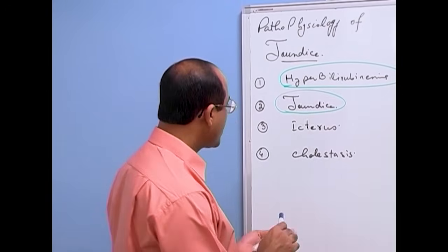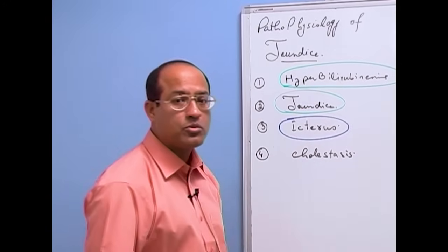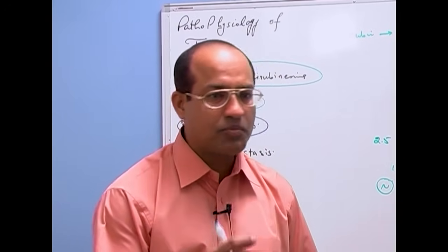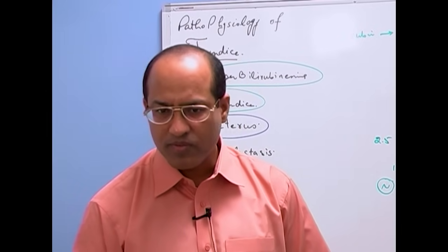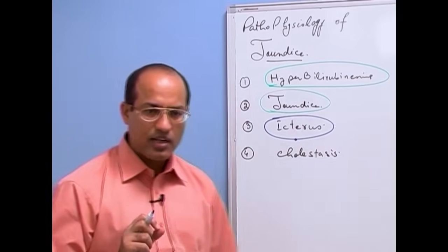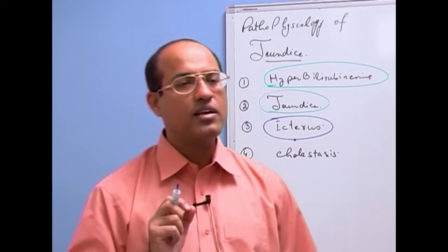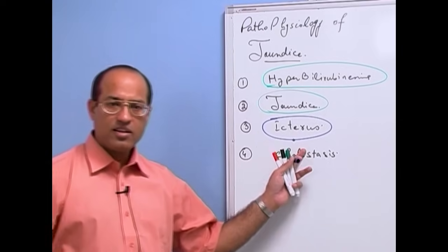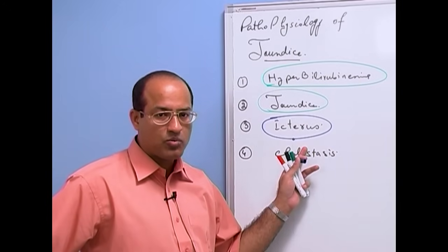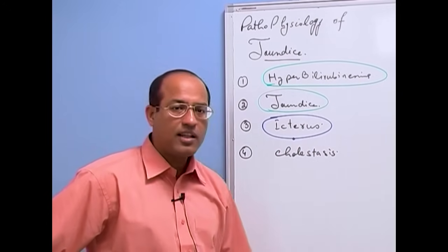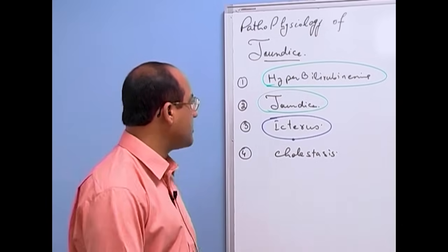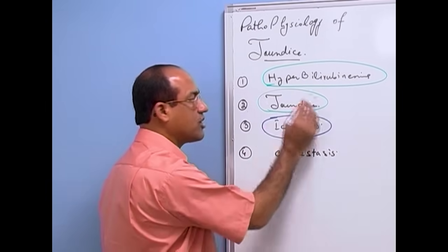Another important thing: what is icterus? Icterus is the term used when, specifically due to hyperbilirubinemia, the sclera turns yellow. When we say 'I can detect icterus in this patient,' it means we are specifically referring to yellow discoloration of the sclera. Remember that sclera shows yellow coloration very easily compared to the rest of the body tissues. The reason: number one, sclera is white, so faint yellow color can be appreciated. Secondly, certain connective tissue molecules in the sclera love to bind bilirubin. Due to these two reasons, icterus is appreciable before full-blown jaundice develops all over the body.